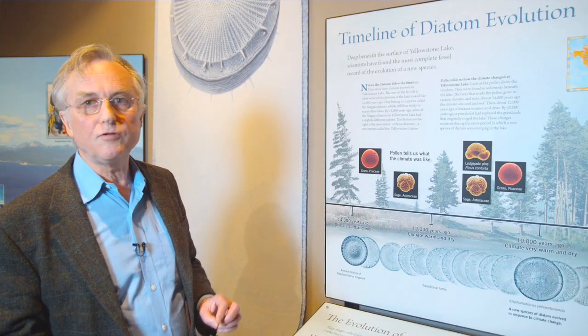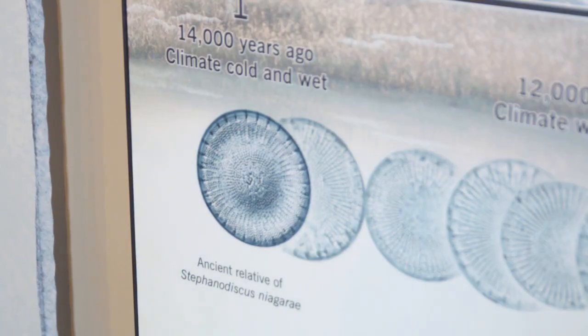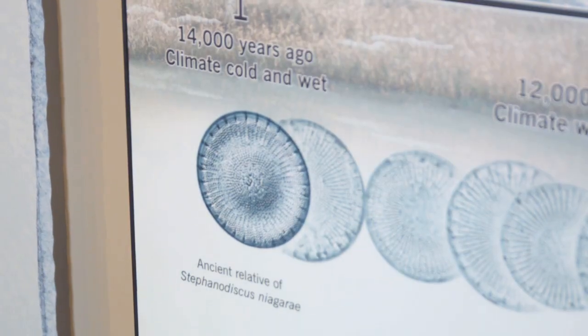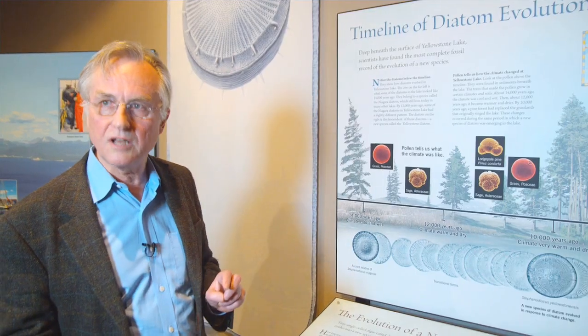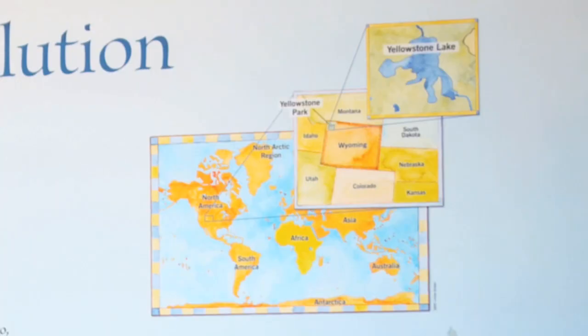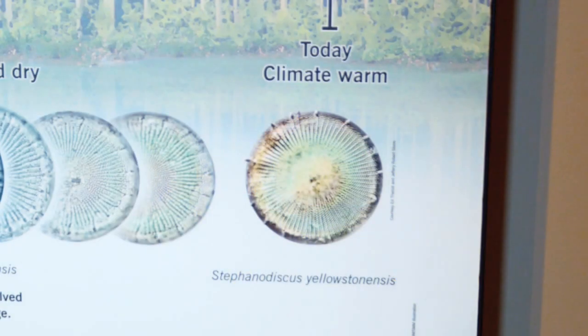If you look in ponds widespread over the United States, you'll find a diatom called Stephanodiscus niagara. It's very, very common. If you look in Yellowstone Lake, you'll find a unique species which is only found there: Stephanodiscus yellowstoneensis.